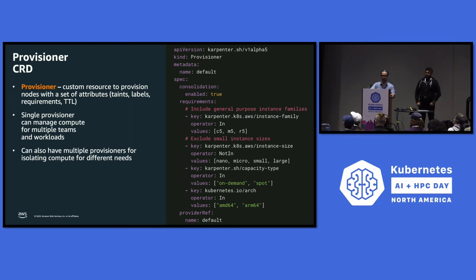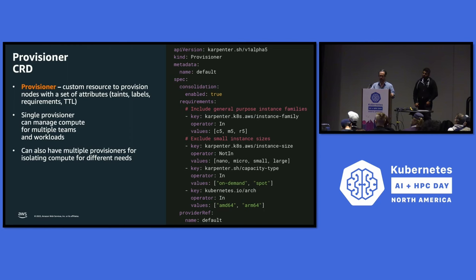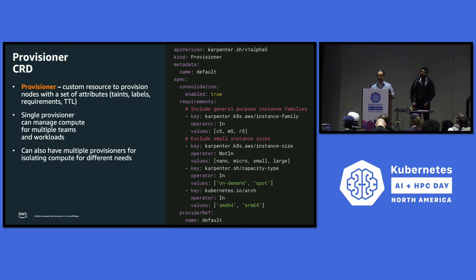This is what's called a provisioner — the main construct you create when using Karpenter. You can create a provisioner with a pool of different machine types: C5, M5, R5, and different values. You can say I want a machine type with GPUs, but if they're not available, use something like Trainium or another type. It's very dynamic. You can also have rules like excluding small instance types — no nano, micro, small, large — and instead launch extra-large and above.